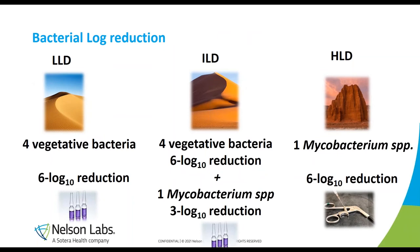For the bacterial log reduction approach: low level disinfection requires a 6-log reduction for four vegetative bacteria — E. coli, Pseudomonas, Staphylococcus, and Klebsiella species using ampules. Intermediate level disinfection requires a 6-log reduction for those four vegetative bacteria plus a 3-log reduction for one mycobacterium species. High level disinfection requires a 6-log reduction of a mycobacterium species, which must be a thermophilic mycobacterium highly resistant to heat.